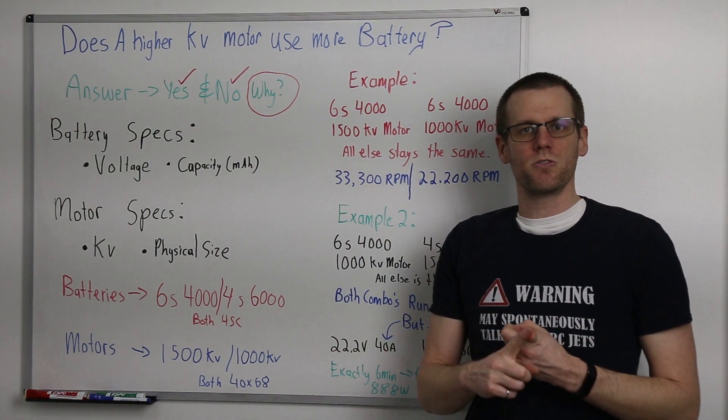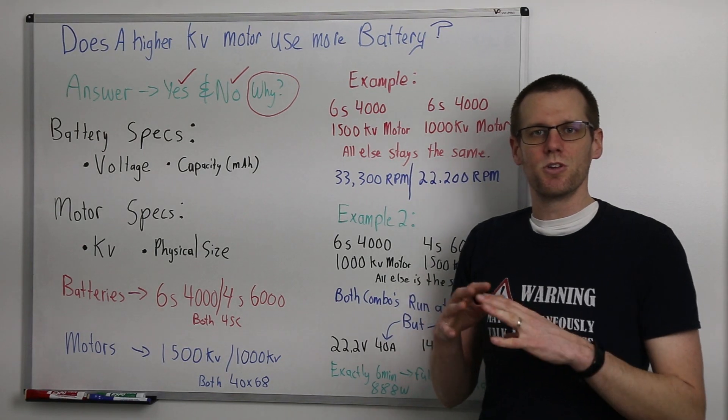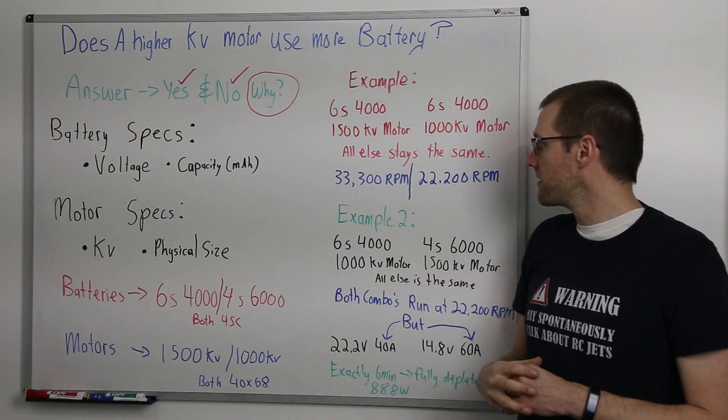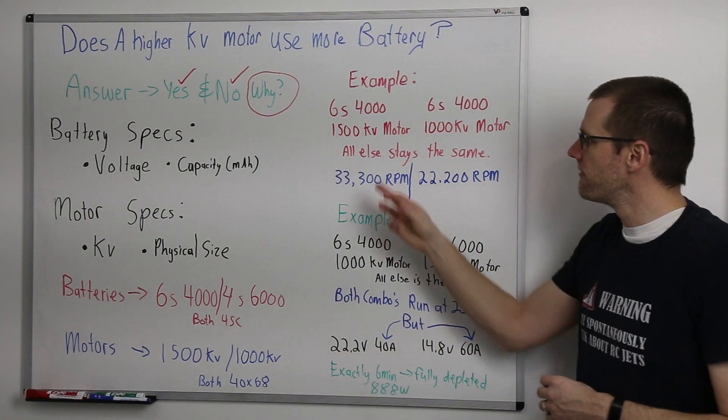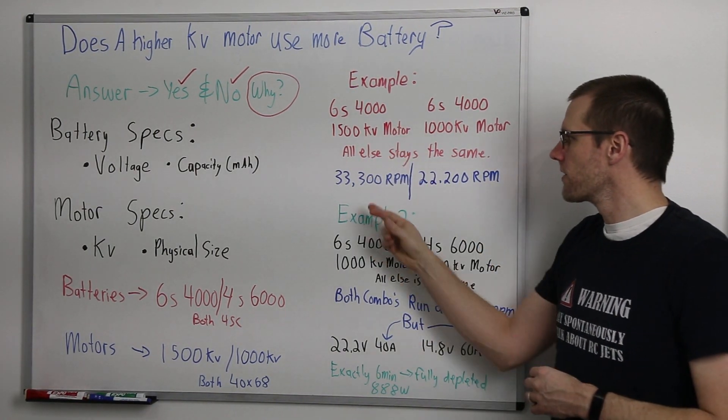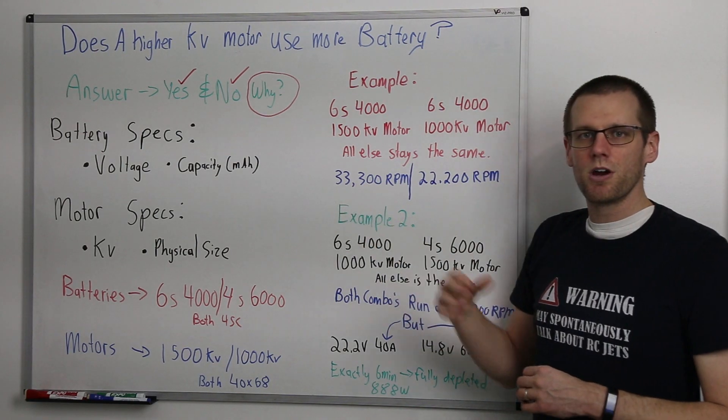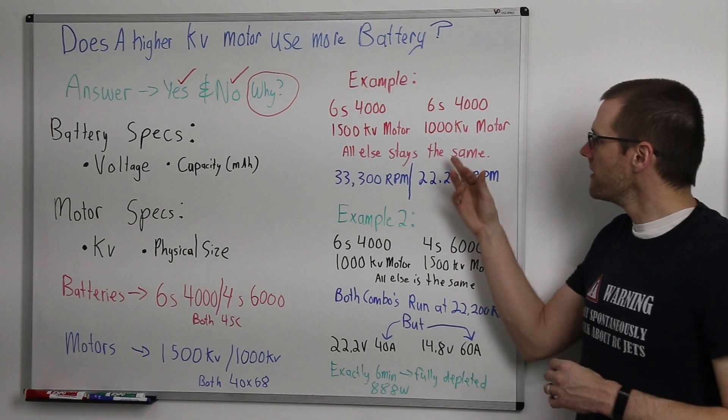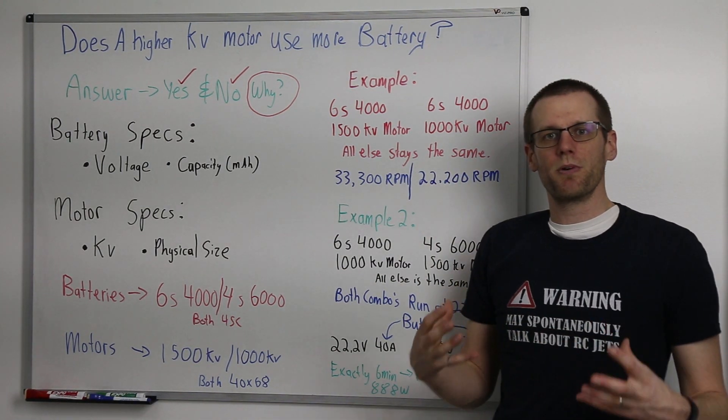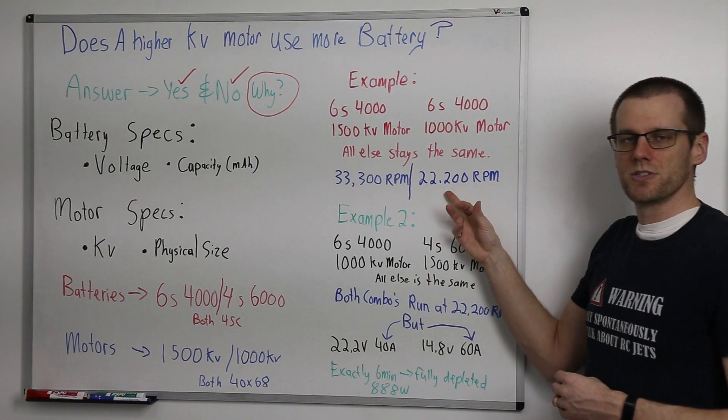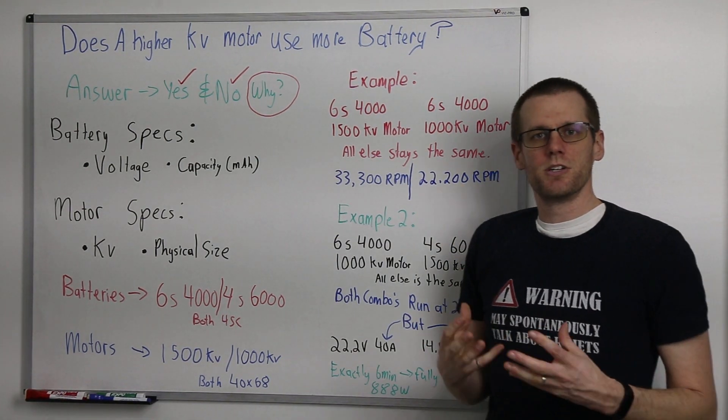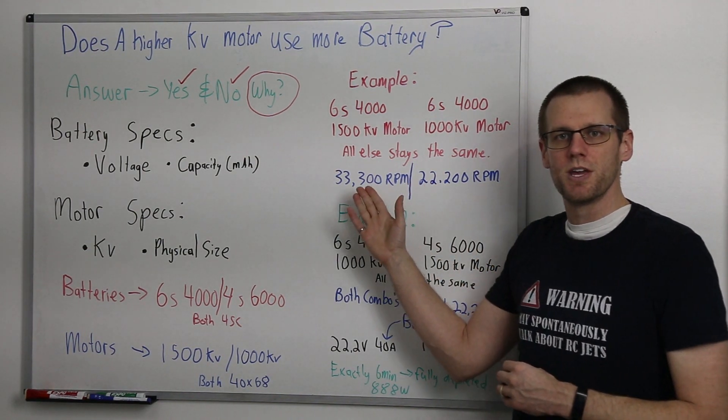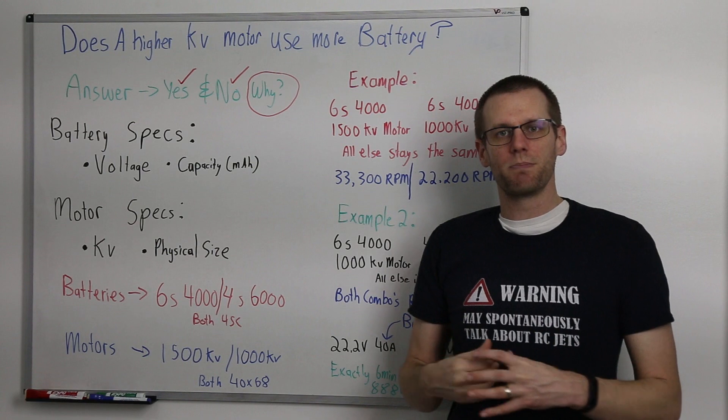Now it doesn't matter if it's a radio control car or if it's a boat or helicopter or you name it. This applies the same way for every single RC vehicle out there. Now in the case for our 1,500 kV motor, we're going to be operating a total RPM of 33,000 and a little bit of change. Now our other case with the 1,000 kV motor, we're going to be operating at 22,200 RPM. So you can see there's quite the significant difference in terms of the actual total RPMs that both of these motors are going to be spinning up to.